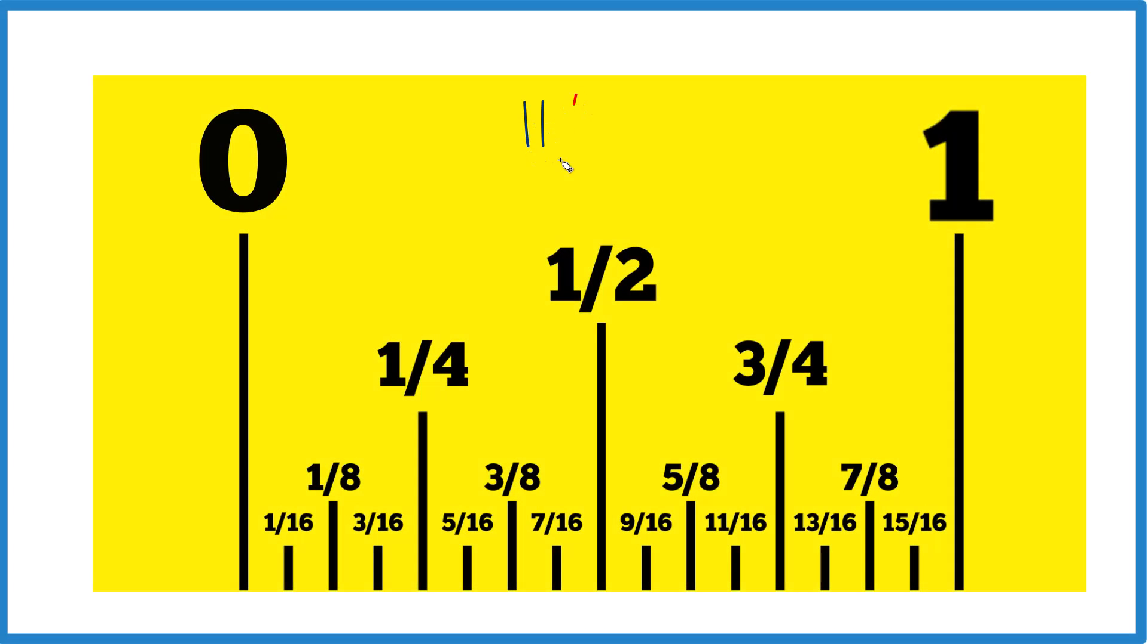So let's find 11 sixteenths on a ruler. The way to think about this, we have one half here right between zero and one. Cut that in half, you get one fourth. Cut one fourth in half, you get one eighth. Cut that in half, you get one sixteenth. So this space right here, that's one sixteenth.